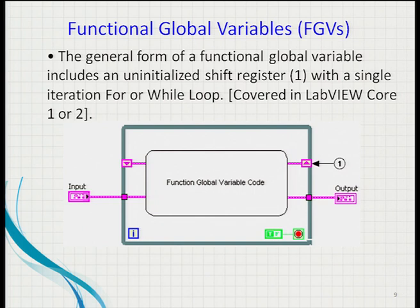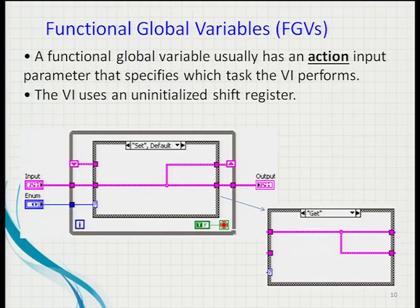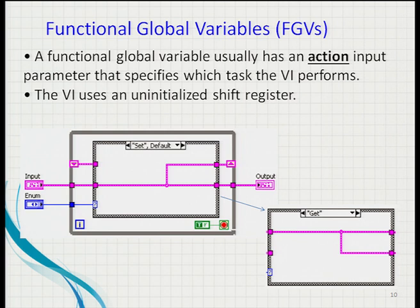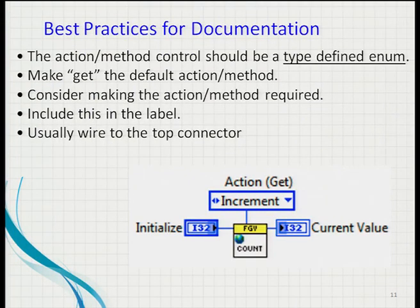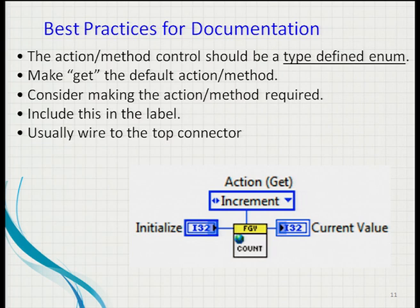This sub-VI, or FGV, iterates only once. You can call this VI many times and execute the cases. A typical FGV has set and get actions — when you select the enum into set mode, you're passing data and storing it into the uninitialized shift register and displaying it. And when you want to get the data, you switch to the other case. Generally, people tend to put the actions at the top of the VI, which is kind of self-documenting.